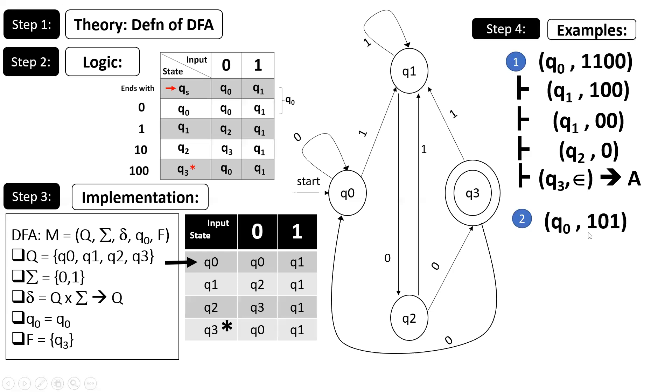Similarly, q0 on 1 is q1, q1 on 0 is q2, but q2 on 1 you go back to q1 and q1 is non-final. Thank you for watching the video.